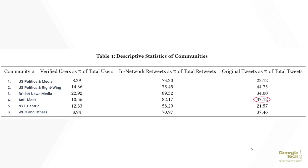The anti-mask community has the second highest percentage of in-network retweets at 82.17%, indicating their ability to overwhelmingly amplify these visualizations to other users within their own network. Notably, 37.12% of the tweets in the anti-mask community are also original tweets, which is the third highest percentage. This emphasizes the importance of original work within this community.